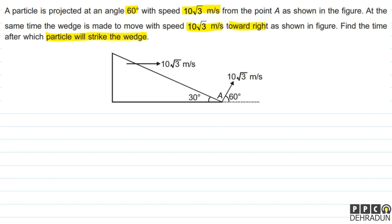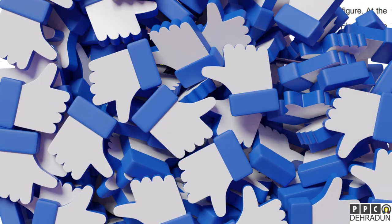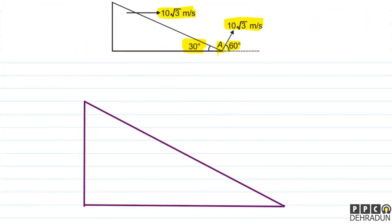तो इस सवाल में कहा गया है कि एक particle फेंका जा रहा है 60 degree angle पर, 10√3 meter per second से, point A से। यहाँ पर एक wedge रखा है जिसका inclination 30 degree है horizontal से। और कहा गया है कि इस moment पर wedge को move कराया जा रहा है 10√3 meter per second से towards right। हमसे पूछा गया है कि यह particle wedge से कितने देर बाद टकराएगा।